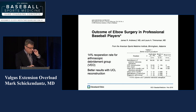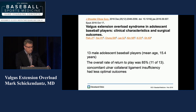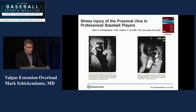The outcome of this surgery has been published by Dr. Andrews — a 14% re-operation rate. They noted better results in the face of UCL reconstruction, again pointing to the fact that most of these athletes probably have some insufficiency in their ulnar collateral ligament. In our adolescent players, one published study showed a return-to-play rate of 85%, with UCL insufficiency noted to be associated with less optimal outcomes.